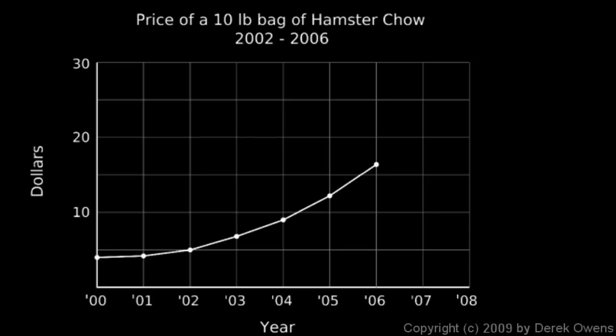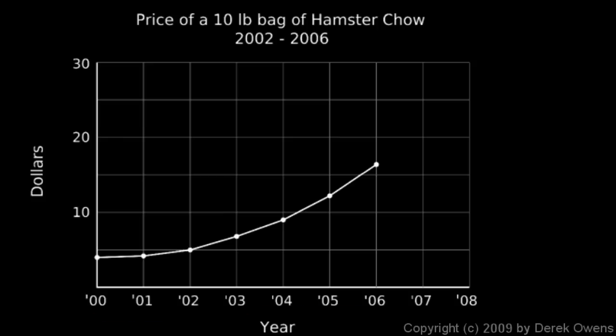Line graphs are also useful for making predictions. If you can establish a trend, you can extend the line or curve along that trend to figure out something beyond the range of given data. In this example, we have data for years 2000 through 2006 showing the price of a 10-pound bag of hamster chow. You can see the price is trending upward as time goes on — prices tend to rise due to inflation.